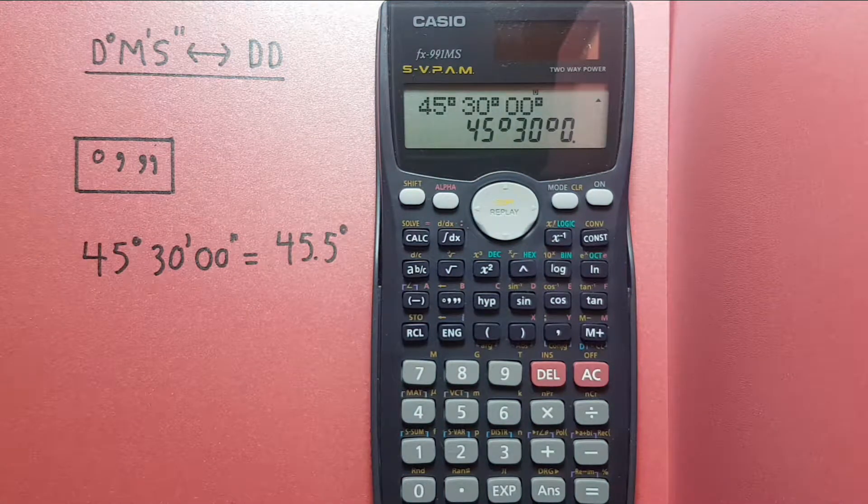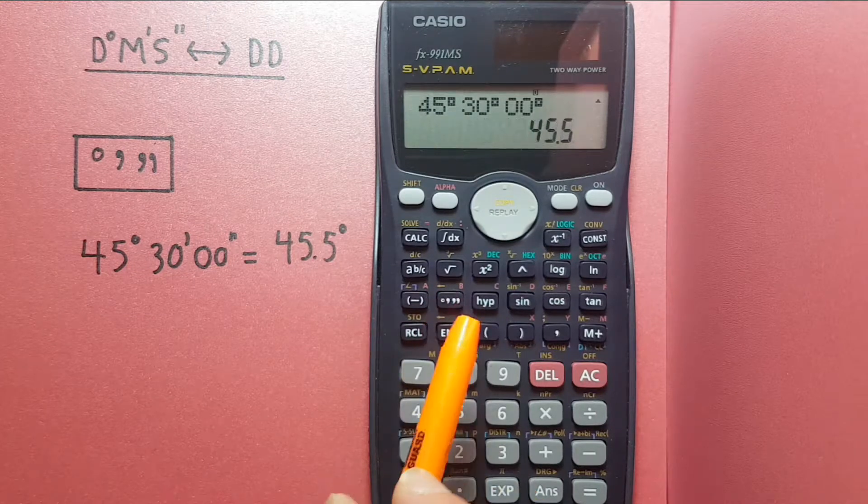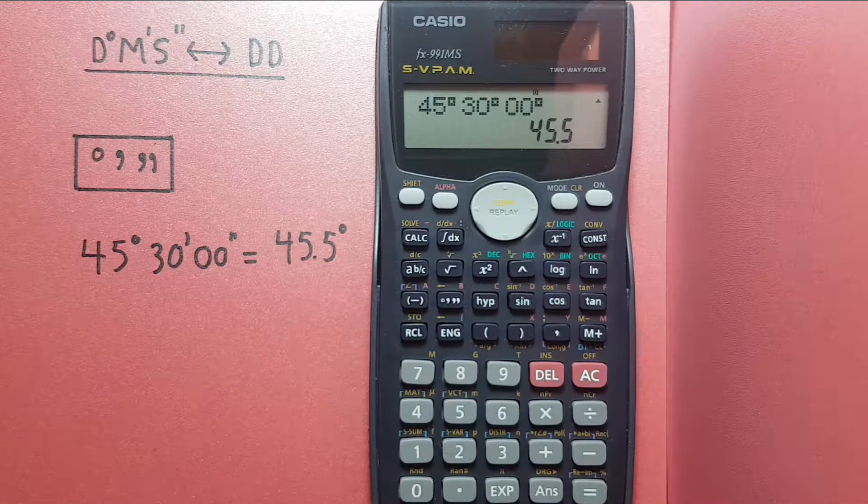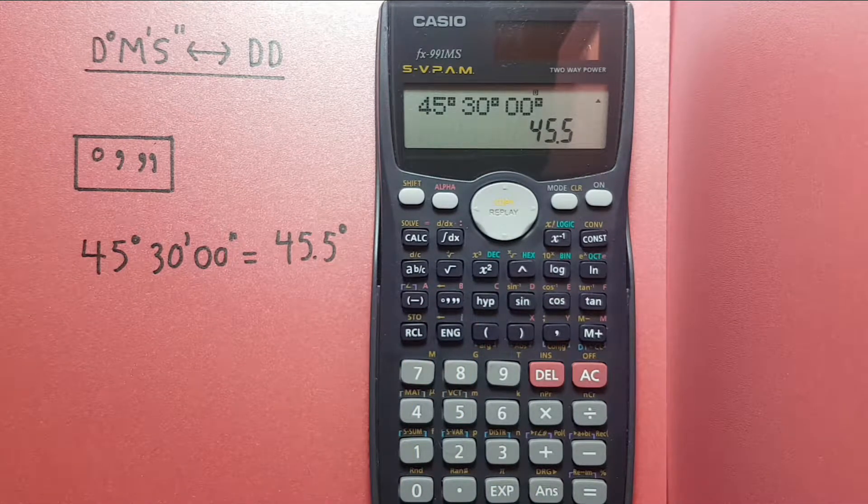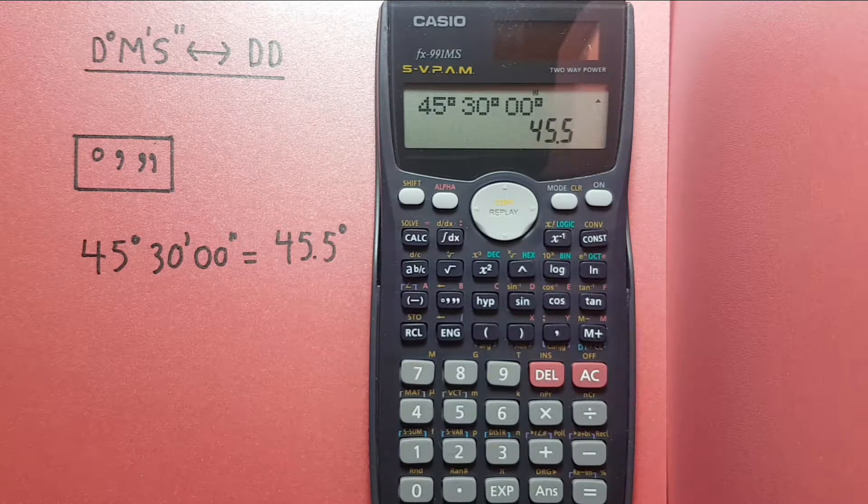Now if you want to convert this to decimal degrees, we would simply press the degree key again and we now have 45.5, which we know is the decimal degrees of 45 degrees 30 minutes.